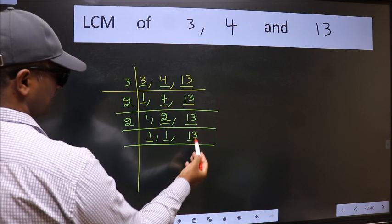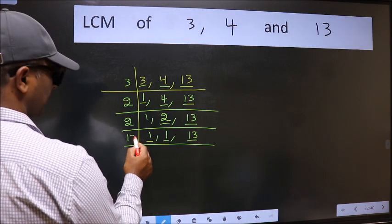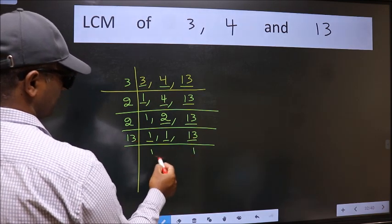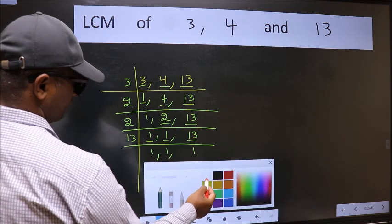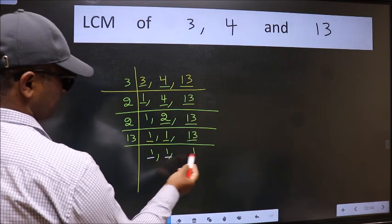So focus on the next number 13. 13 is a prime number so 13 wants 13. So we got 1 in all the 3 places.